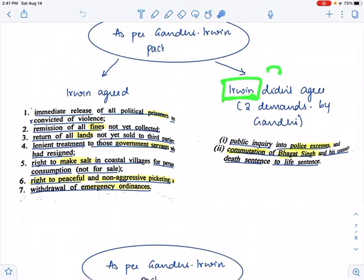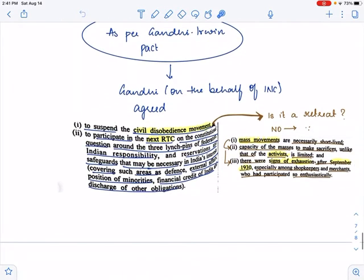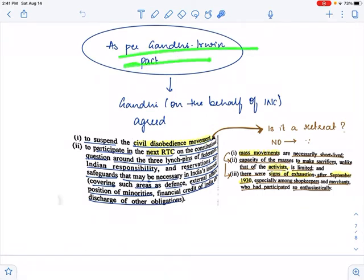So remember there are two demands of Gandhi that were not accepted by Irwin. Irwin agreed to seven demands that were put forward by Gandhi. As per this pact, Gandhi on the behalf of the Indian National Congress agreed to sign this pact.